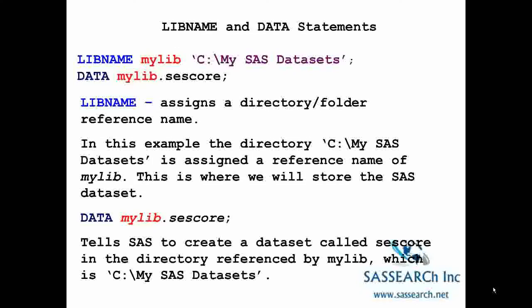To create a permanent SAS data set, you will need a libname statement. A libname statement is used when you want SAS to store or retrieve SAS data sets from a directory other than the default SAS work directory. Recall that when we create temporary SAS data sets, they always have the prefix of work, indicating that the temporary data set is stored in a SAS work directory that only exists when the SAS session is open.